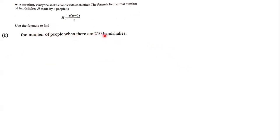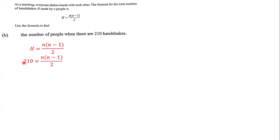We need to figure out the number of people when there are 210 handshakes. In the previous question we had to find h and were given n. In this instance, we are not given n — we have to figure out what n is. We are given h, and in this case h is 210. So we substitute 210 into the formula: 210 = n(n-1)/2.